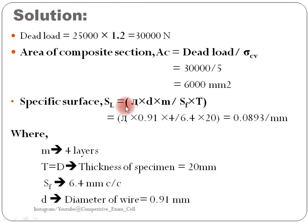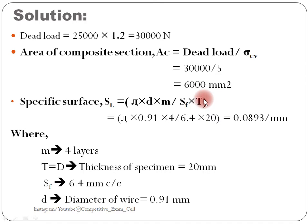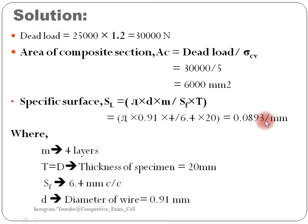After the area of composite, we need to calculate the specific surface available. The formula is sl equals 5dm divided by sf times t, where d is the diameter of the wire, m is the number of layers of wire, sf is 6.4 (spacing of the fibers), and t is the thickness of the specimen, 20 mm. Put all the values and we get sl equal to 0.0893 per mm.